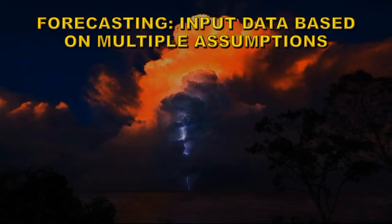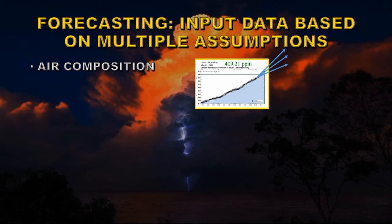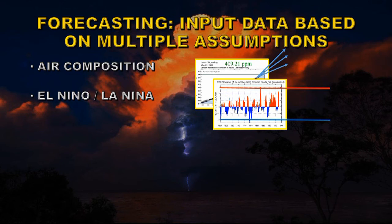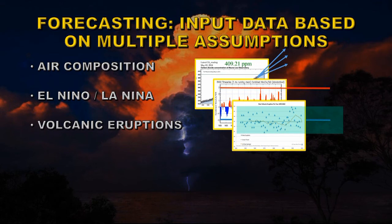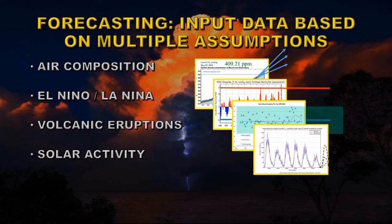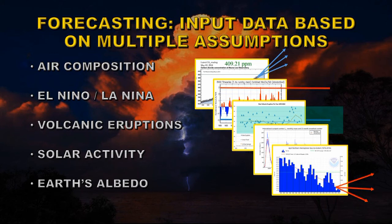So what are the issues when you turn hindcasting into forecasting? Well, many of the inputs that you had data for in hindcasting you now have to assume what will happen in the future. For example, the levels of carbon dioxide — will they accelerate, stay about the same, or decelerate? When and how long and how big are the future El Niño and La Niña cycles going to be? Volcanic eruptions are random and can't be forecast. Solar activity — is the next cycle going to be smaller, about the same, or larger? Nobody knows. And the Earth's albedo — the amount of ice and snow cover across the planet — is that going to continue to fall, level off, or start to recover? Again, nobody knows.